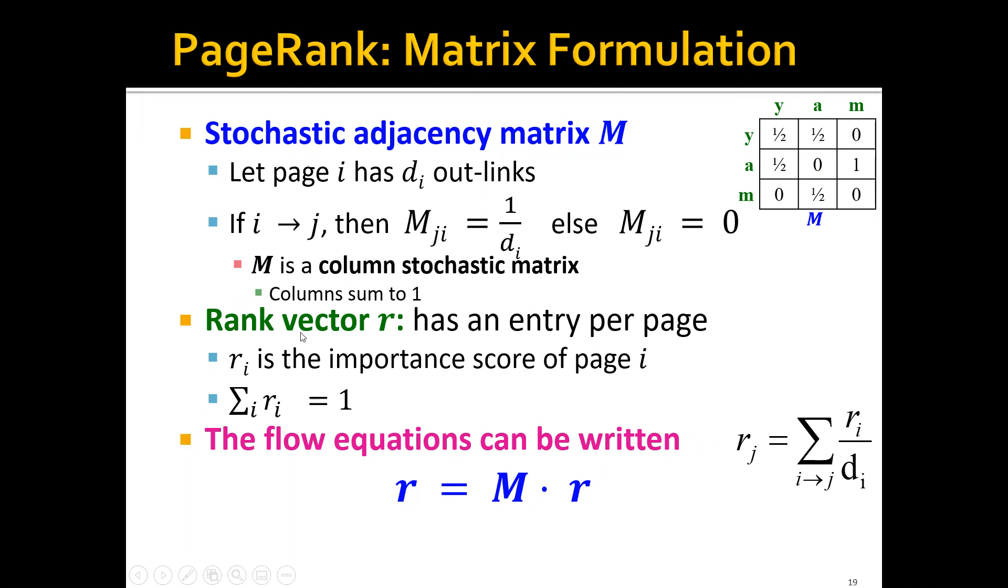We have this rank vector r, which has one entry per page, and ri is the importance score of page i. Remember in the flow formulation, we have an additional constraint. Correspondingly here, we have that the sum of all entries of r is equal to one.